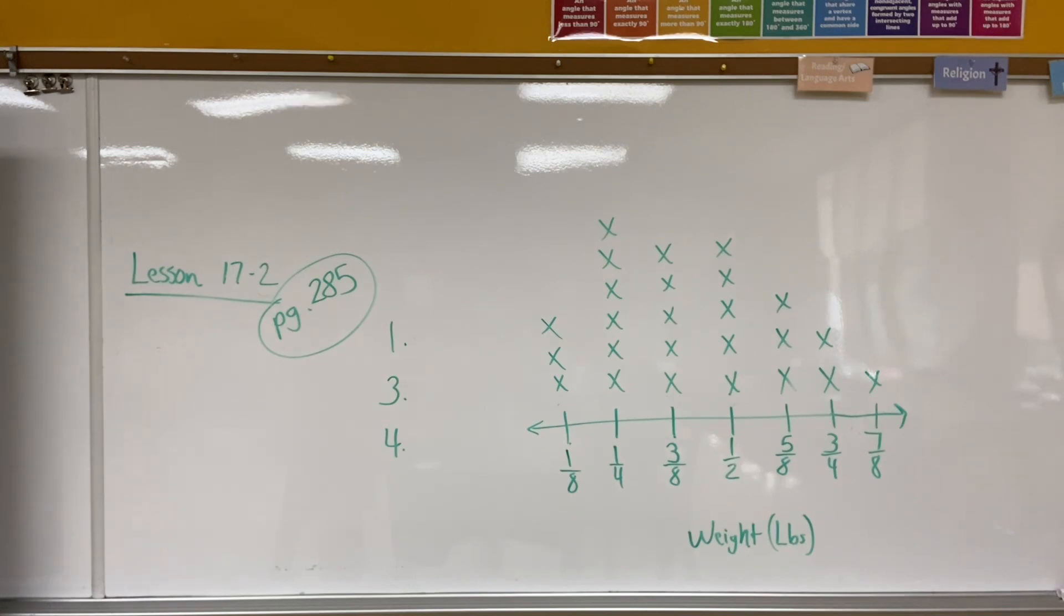For number one, what is the interval of the line plot? That means I'm starting from the beginning and I'm going up by how much every single time. Be careful. When you compare fractions, they all need to have the same what? The same denominator. So if you're going to be comparing the fractions, you need to make sure that they all have the same denominator.